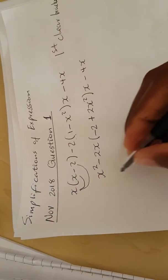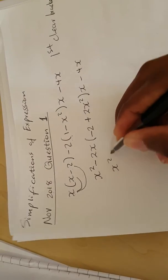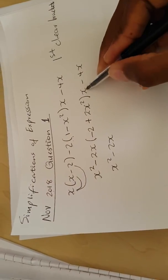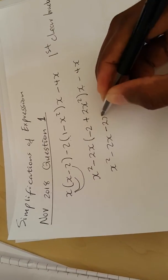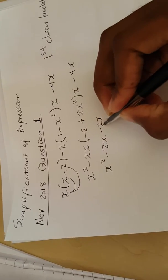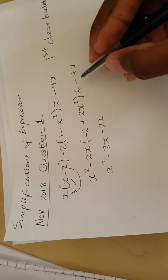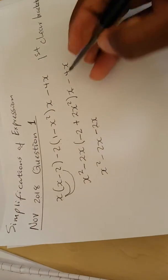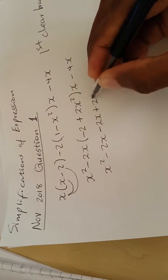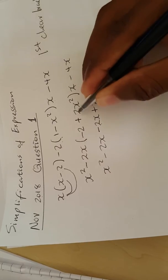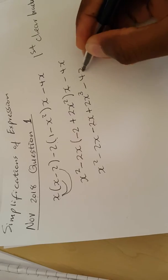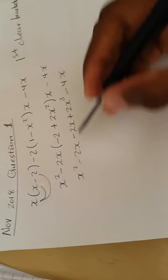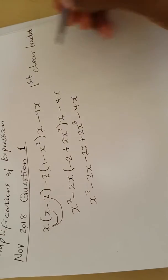This one remains the same: x squared minus 2x. Then this outside x times negative 2 gives negative 2x, and this same x times positive 2x squared gives positive 2x to the power of 3. Then we have minus 4x. After clearing the brackets, the next step is to group like terms.